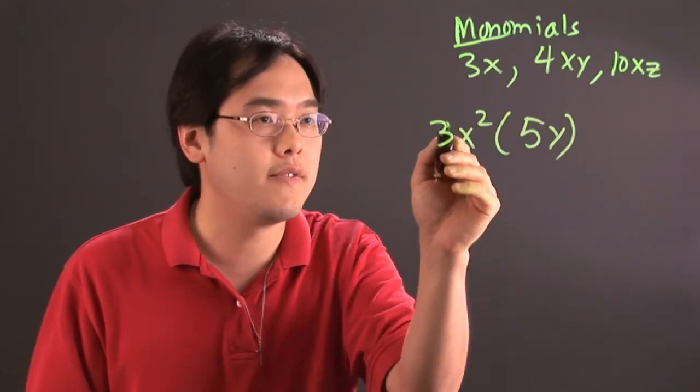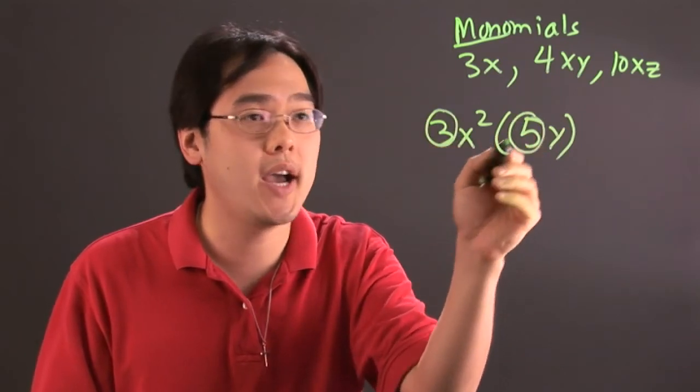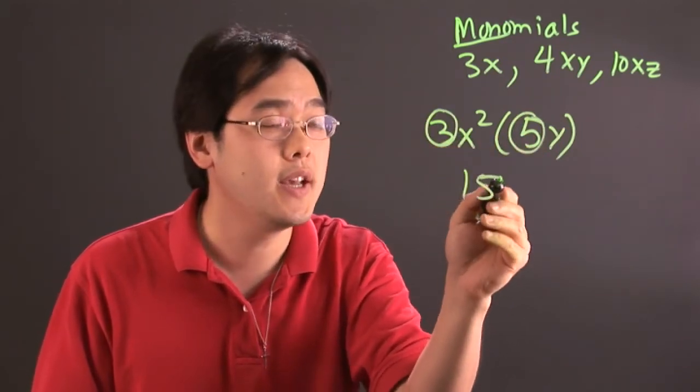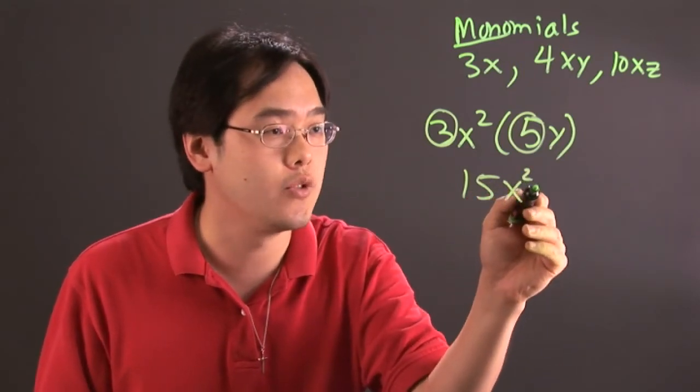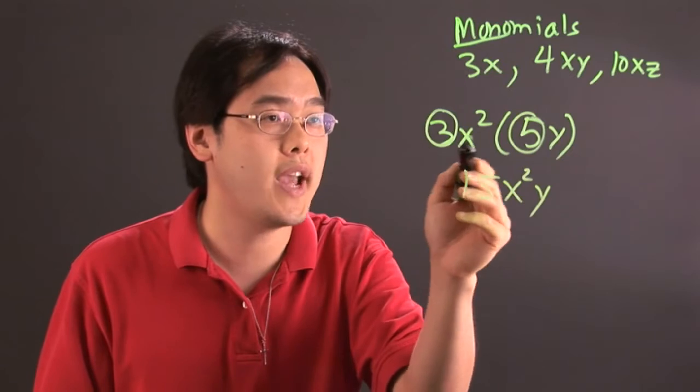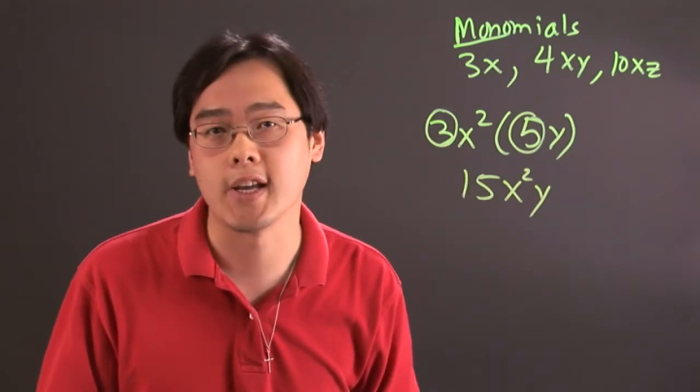Here you have numbers that are the same, 3 times 5. You multiply those, you have 15. But because the x and y are different bases, the best thing you can do is just attach the two like so. So 3x squared times 5y is 15x squared y.